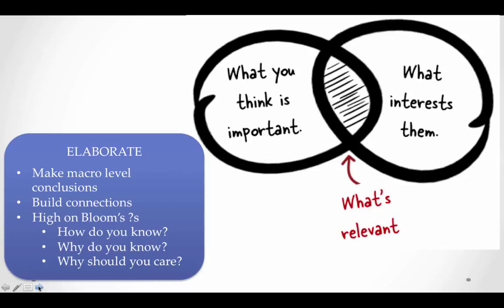Now that they've got some new information, we want to see if they can hold on to it and begin to apply it to new situations. Can they elaborate? Can they start making macro-level conclusions and building connections between things? This is where we ask some higher-level questions up on Bloom's Taxonomy: How do you know? Why do you know? And why should you care?